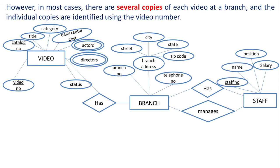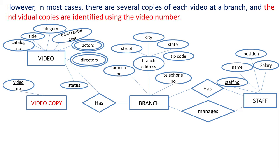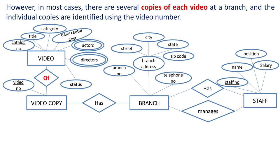However, in most cases there are several copies of each video at a branch, and the individual copies are identified using the video number. Hence, video copy is an entity. Video number is an attribute of copy, so we remove the video number from video and add it as an attribute of copy. Since copies are identified using the video number, it is the primary key of copy. There is a relationship between video and video copy. Since branch keeps copies of videos, instead of a relationship between branch and video, we keep the relationship between branch and video copy — 'branch has stock of video copies.'